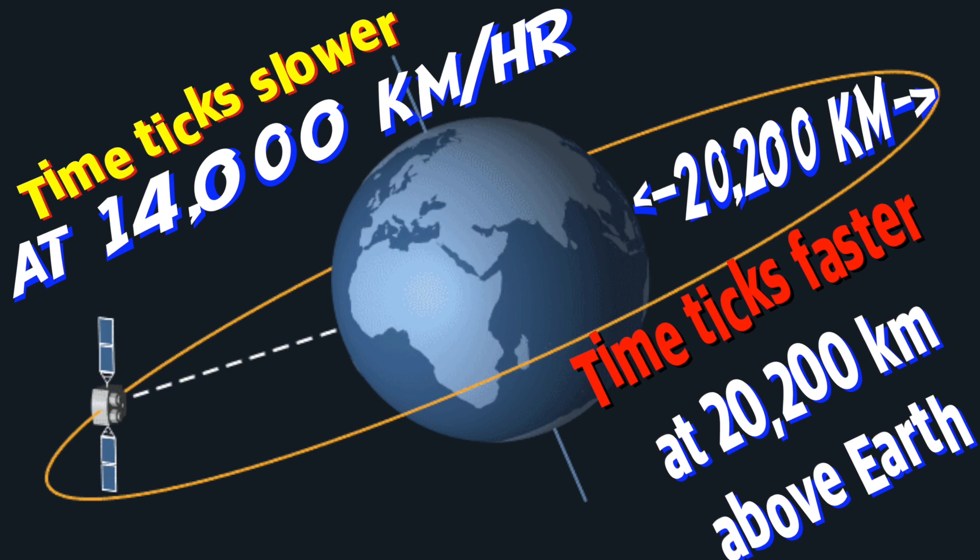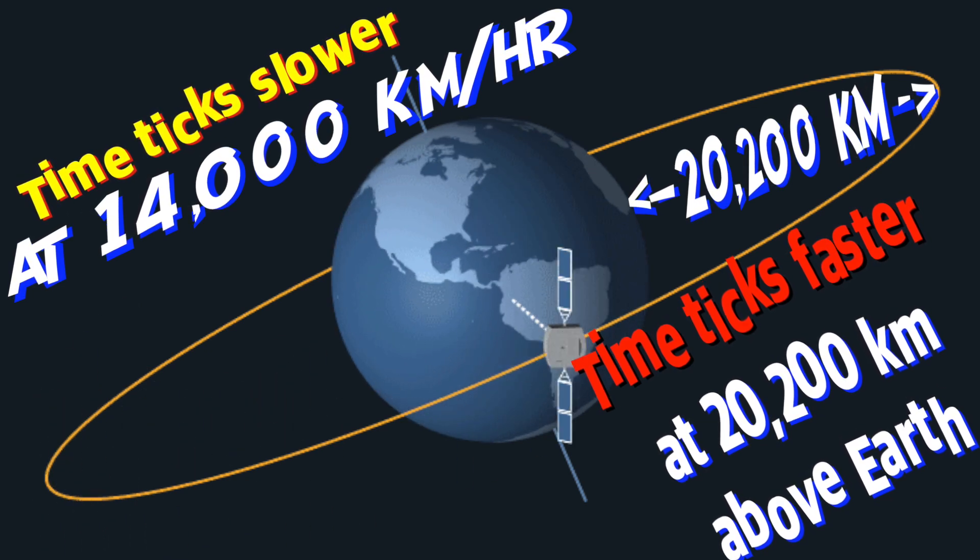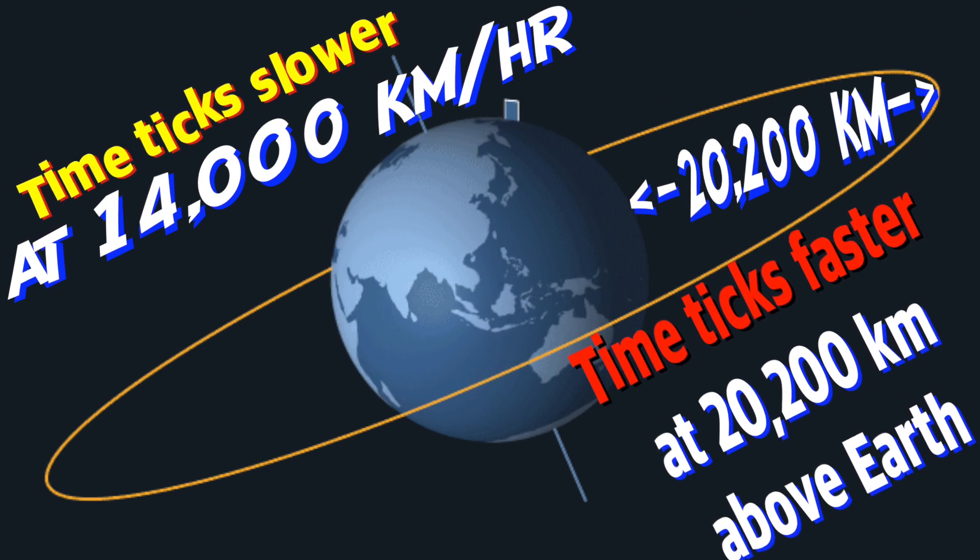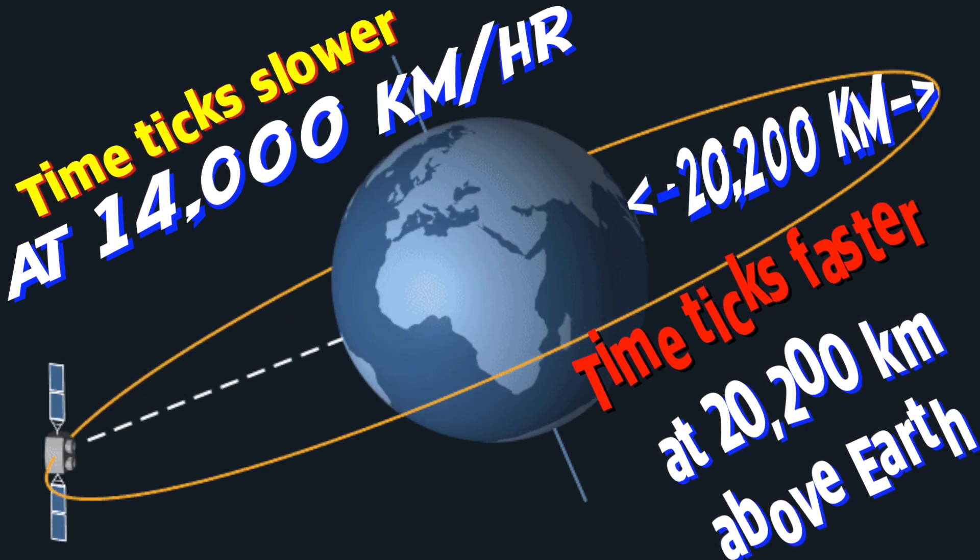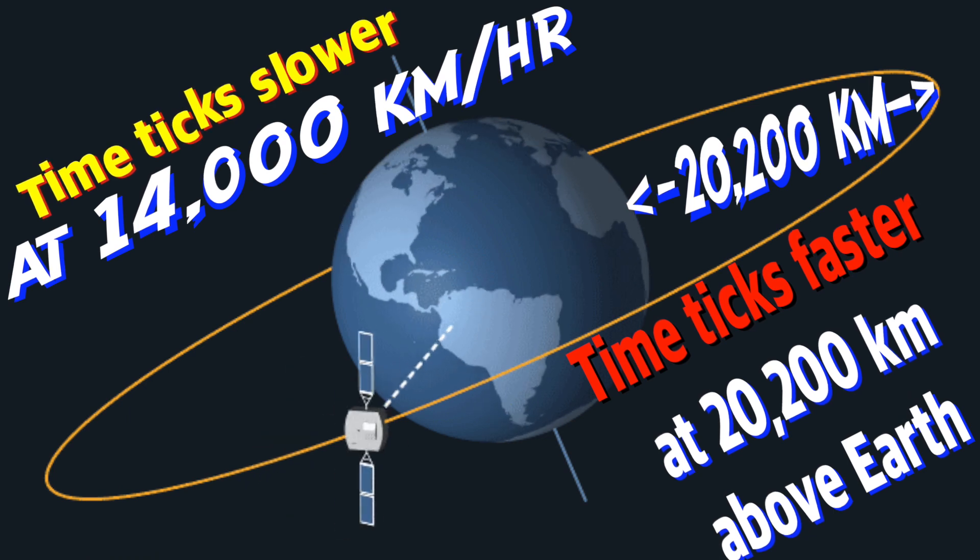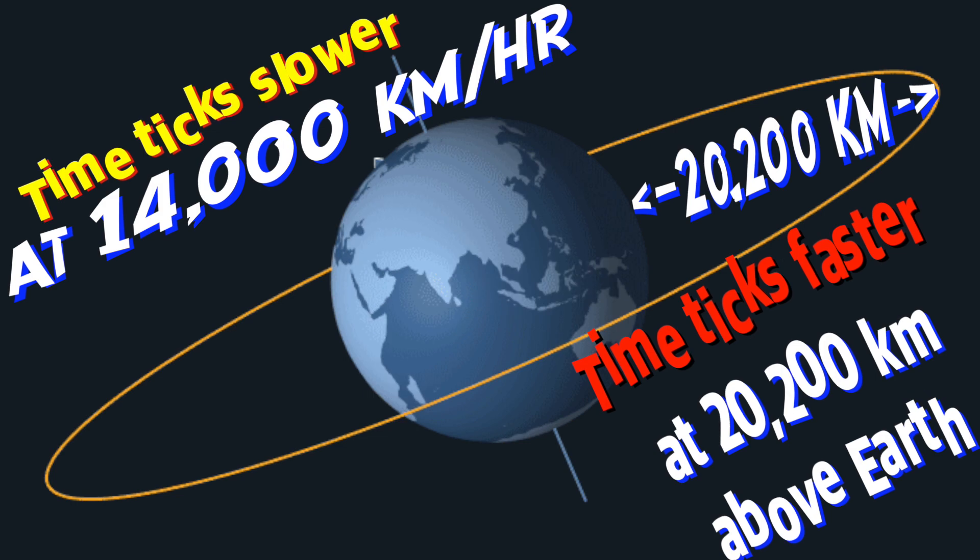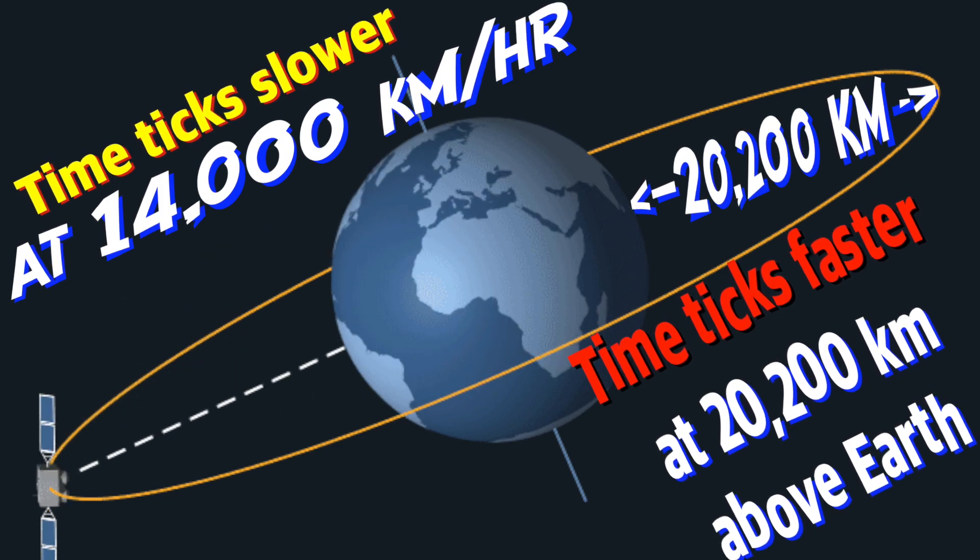So 20,200 kilometers above the Earth's surface is the distance at which the time slowing effect and the time ticking faster effects cancel each other.